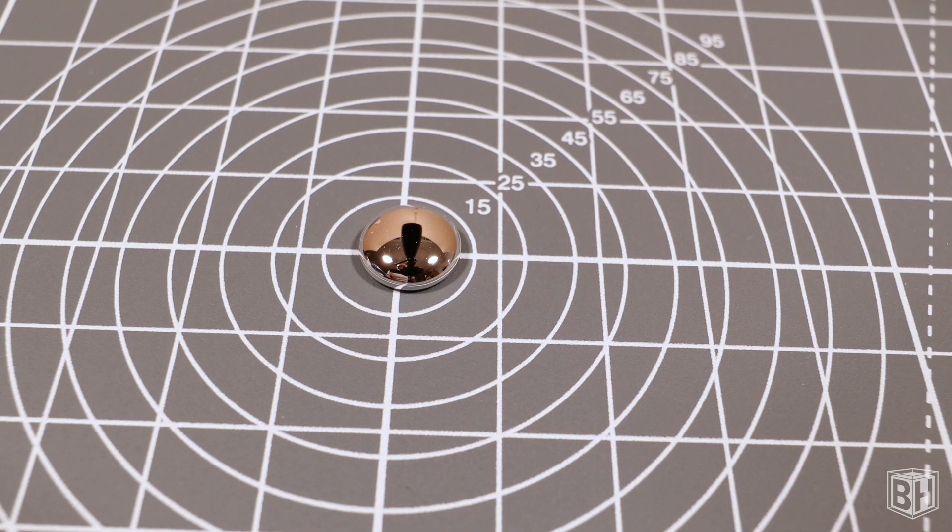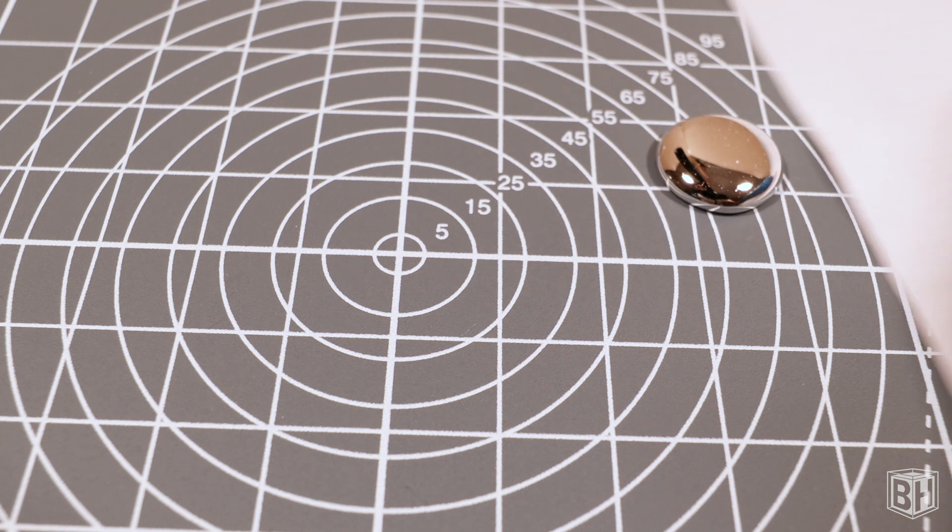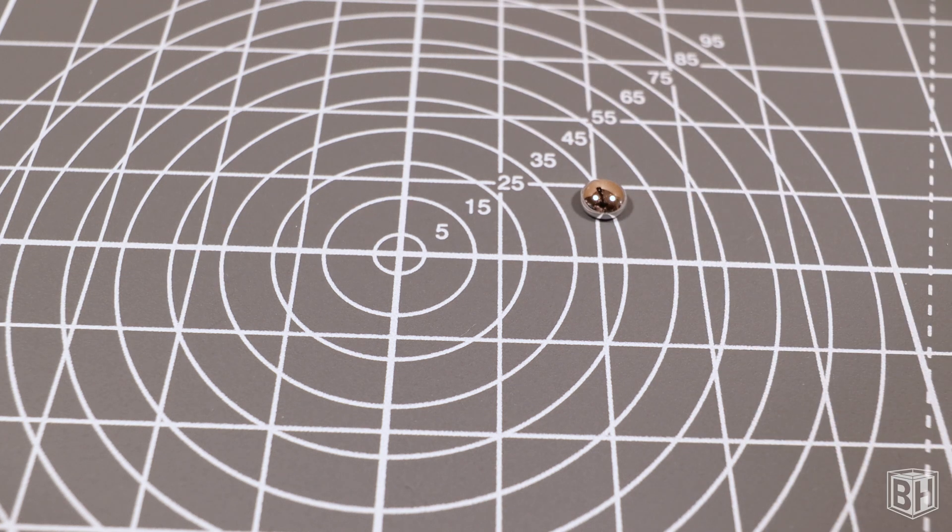Another thing I observe is the mercury moves around a lot. It slides across this surface as though there's little to no friction. This could be a problem when trying to cast it in resin, as I'll need it to stay in the center of a mold away from the edges.